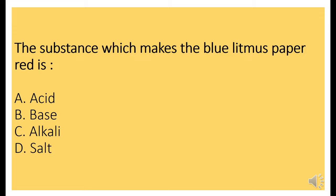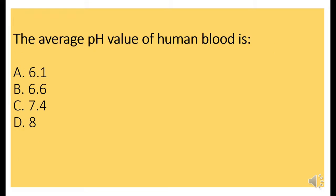Next question. The substance which makes the blue litmus paper red is Option A, Acid. Acid in its contact makes blue litmus paper red.